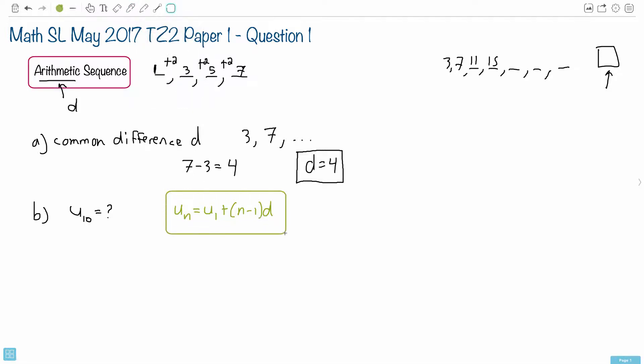So in this case, the equation goes Un equals U₁ plus (n minus 1)d. You don't have to memorize this, you look this up. It just becomes a matter of identifying what you need. If you want U₁₀, that means we want when n equals 10.